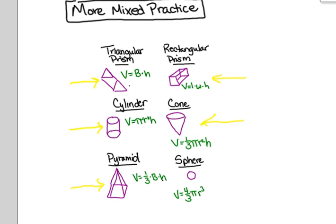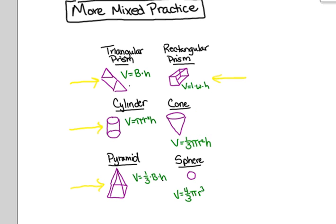The cone has one circular base that narrows to a point. And the sphere — I like to think about it as being a ball. But again, the most important thing here is that you correctly identify which shape you're working with, so that you can, therefore, use the correct formula.